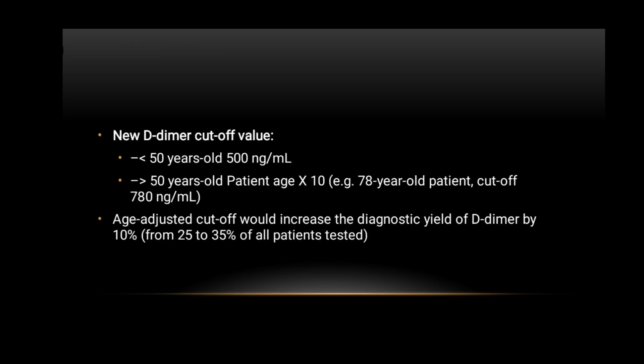For patients under 50 years old, the D-dimer cutoff value is 500 nanograms per mL. For patients over 50, the cutoff is calculated by multiplying the patient's age by 10. For example, a 78-year-old patient's cutoff would be 780 nanograms per mL. Age-adjusted cutoffs increase the diagnostic yield of D-dimer testing by 10%, from 25% to 35% of all patients tested.